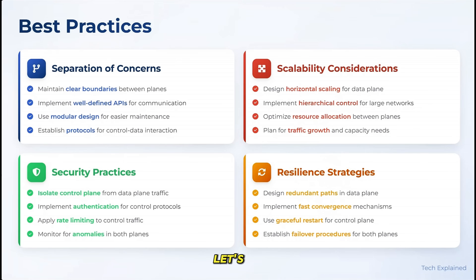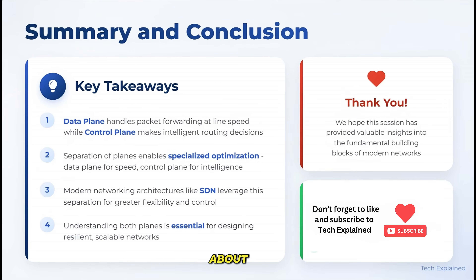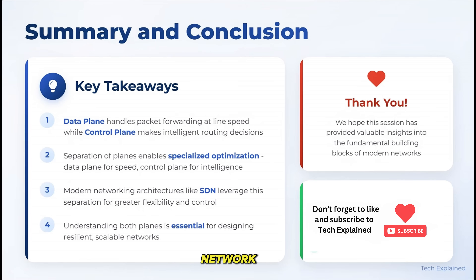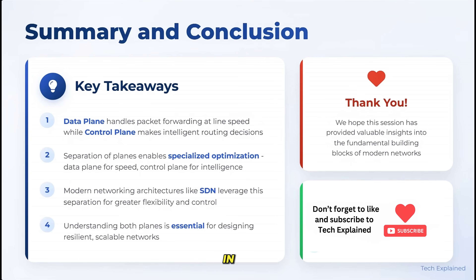As we wrap up, let's recap what we've learned about data plane and control plane in networking. The data plane is responsible for actually forwarding packets — it's the muscle of the network that moves data from source to destination. The control plane is the brains that makes decisions about where that data should go. These two planes work together in a carefully orchestrated dance: the control plane determines the best paths and sets up the rules, and the data plane follows those rules to move traffic efficiently.